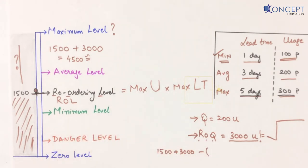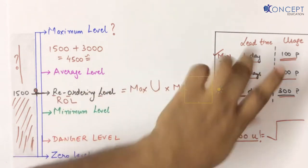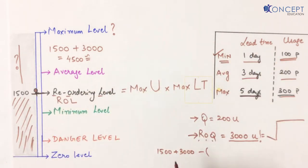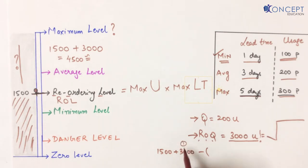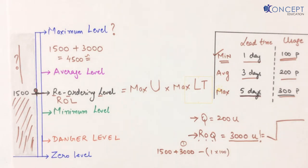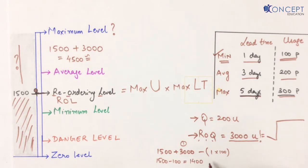When the order came, we had a minimum usage. How many days did it take? It took one day. And when the order came, I used one day's worth. We used 1 day × 100 units, so we used 100 units. What happened? We had 1400 units remaining. Then when 3000 units arrived, 1400 + 3000 = 4400 units. So what happened to me? That's 4400.